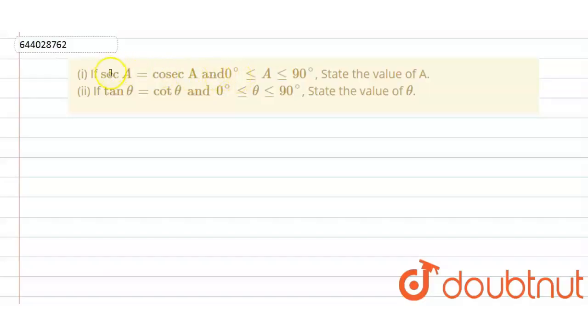Hello everyone. In this question, we have to find out the value of A, and in this second part, we have to find out the value of theta. Both A and theta lie in the range of 0 to 90 degrees.